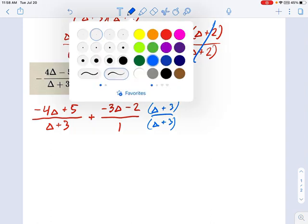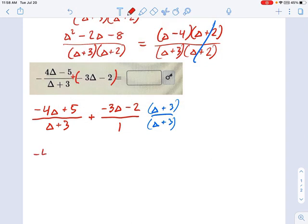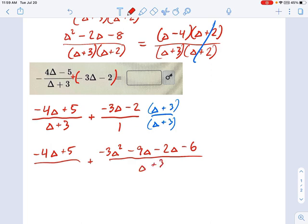So, we have to go through some multiplication to make this work out. You have negative 4 delta plus 5 from the left. And on the right, we have negative 3 delta times delta is negative 3 delta squared. Negative 3 delta times 3 is negative 9 delta. Then we have a negative 2 delta. And then we have a negative 6. I'm just foiling the top of this fraction.